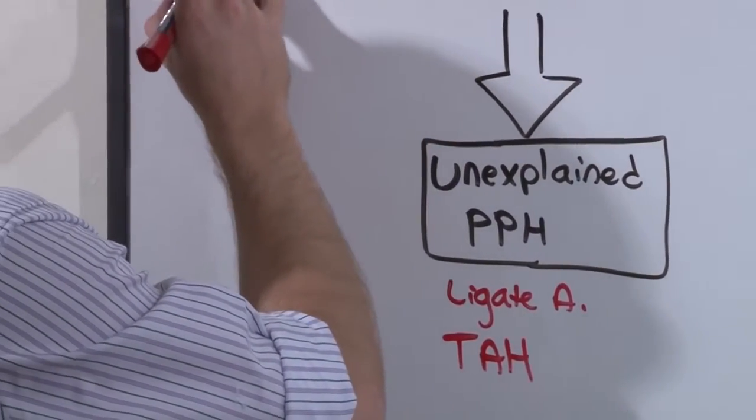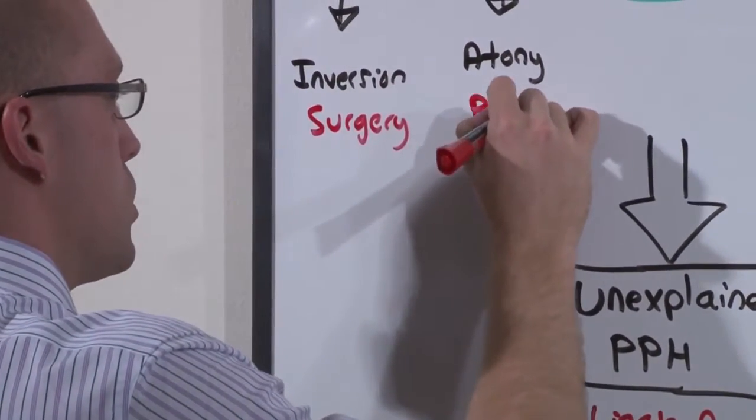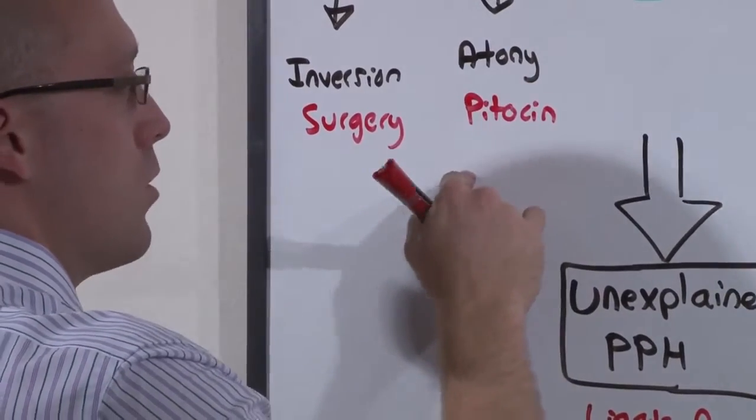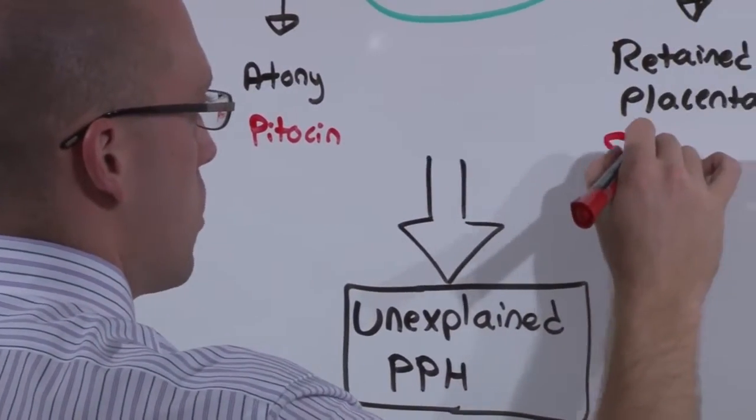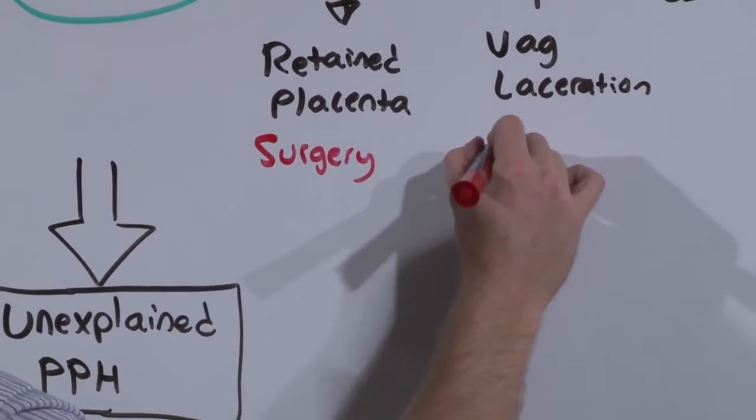Inversion requires surgery. Atony is the only one that doesn't, and you are going to use Pitocin to try to get it to contract down. Retained placenta requires surgery. And vaginal lacerations require surgery, that is a suture.